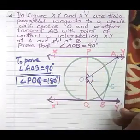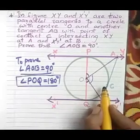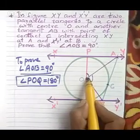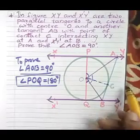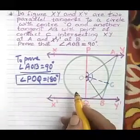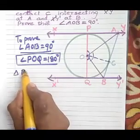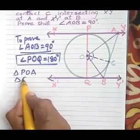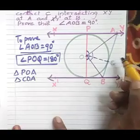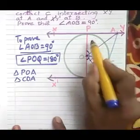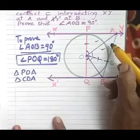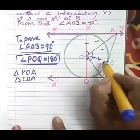POQ means this total angle is 180 degrees. Now as a construction, we are joining OC because C is the point of contact and AB is a tangent that is given. Now you can see two triangles: triangle POA and triangle COA. In these two triangles, OC is a radius, OP is also a radius, and OA is common to both triangles.